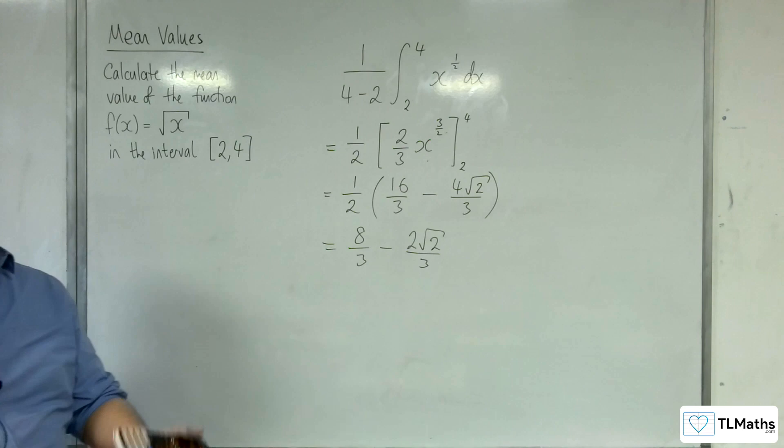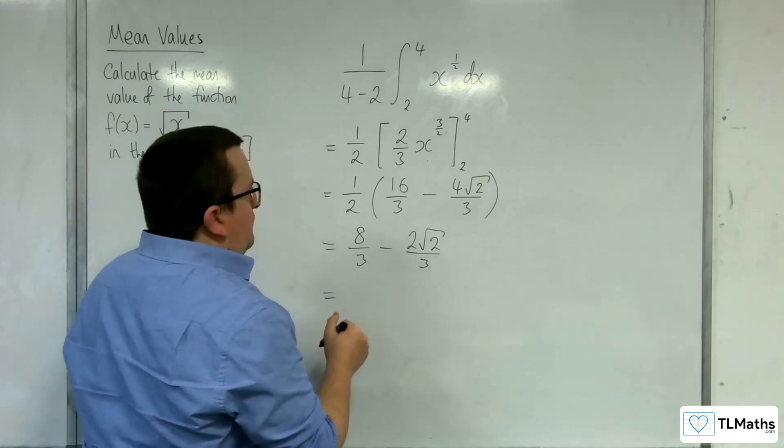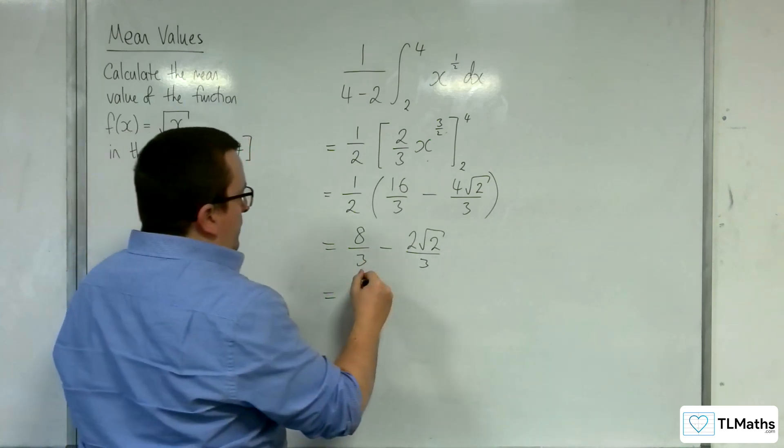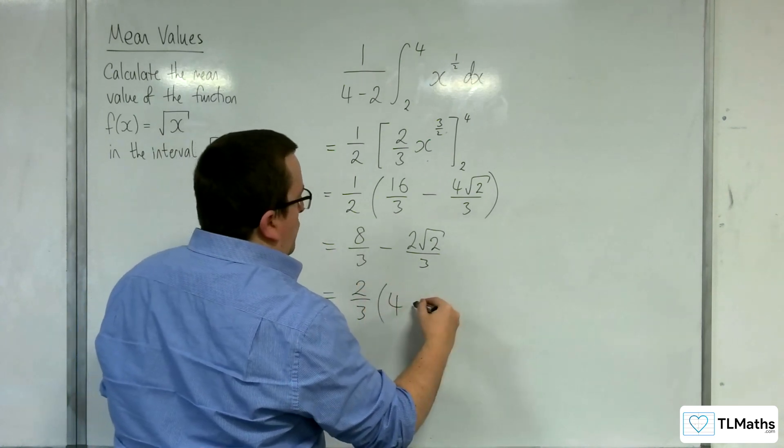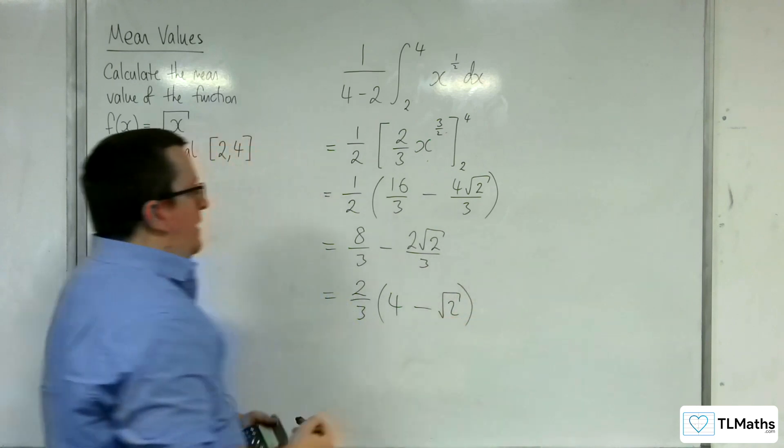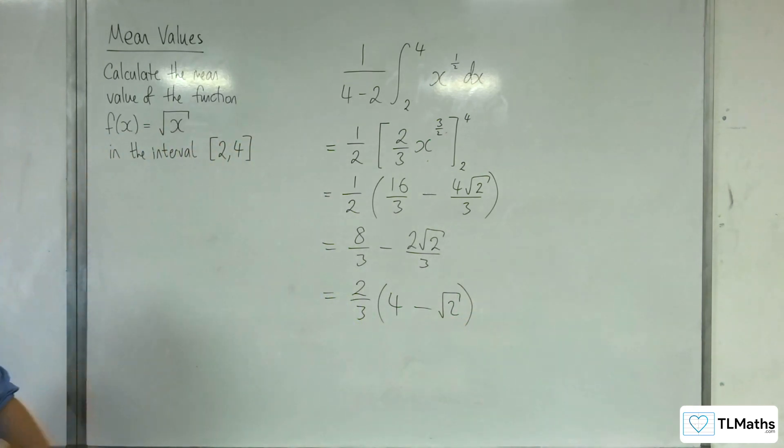Now you could factor the third out if you like. You could factor out 2 thirds actually. So 2 thirds times 4 take away root 2. You could write it like that. So there's a few different ways you could write it.